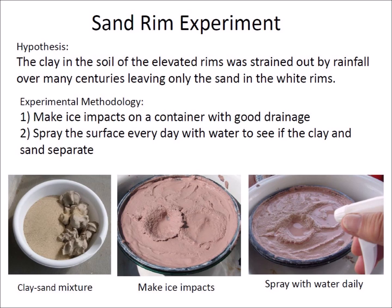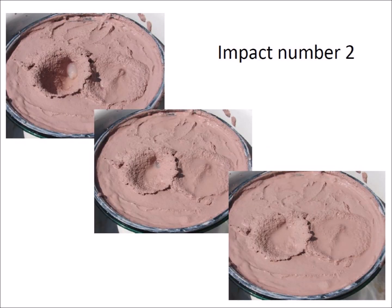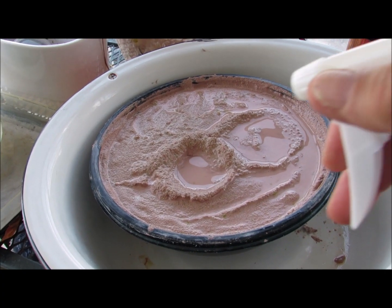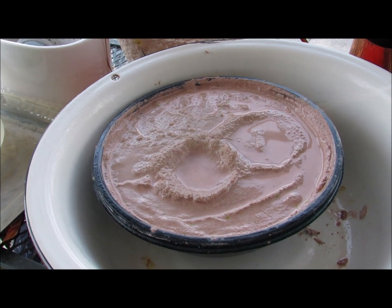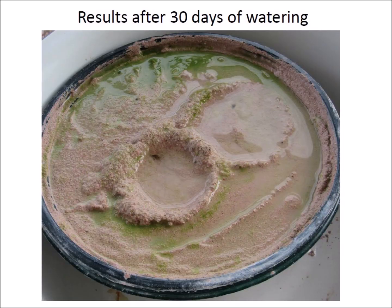I decided to test this hypothesis by making ice impacts on a viscous target of sand and clay in a container with good drainage, then spraying the surface every day with water to see if the clay and the sand separated. I fired a piece of ice against the sand and clay target using a slingshot. After the impact, I shook the container to speed up viscous relaxation. The second shot landed adjacent to the first impact, and the rim of the cavity slightly overlapped the first crater, similar to many examples in the Carolina Bays. I started a daily ritual of spraying the surface with water to simulate rain. Thirty days later, a forest of algae was growing on the surface and the rims of the impacts had a grainy appearance from the sand, because some of the clay was being washed away. The process was working, but it was evident that much more time would be required to rinse out the clay from the sand.